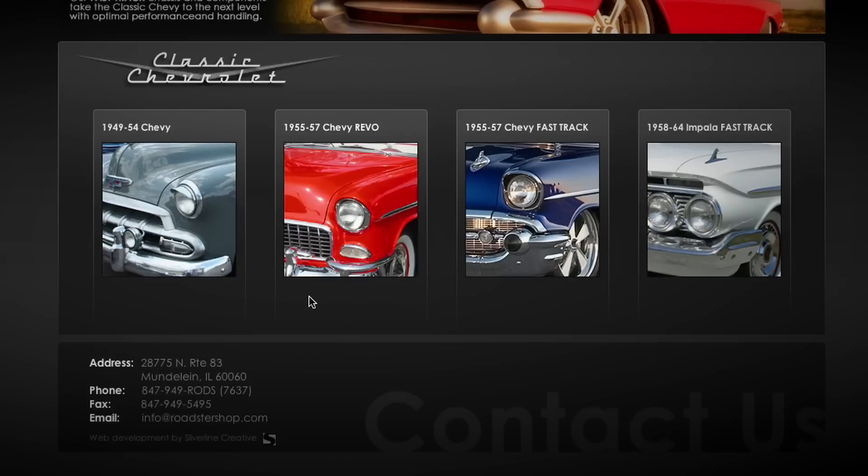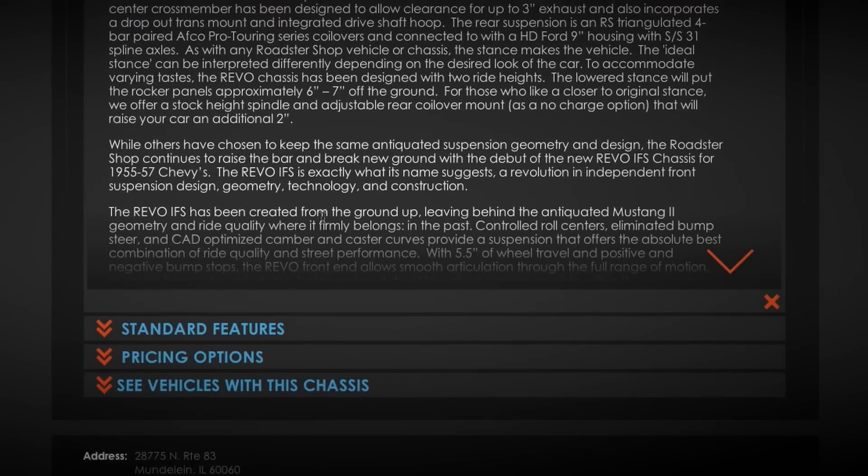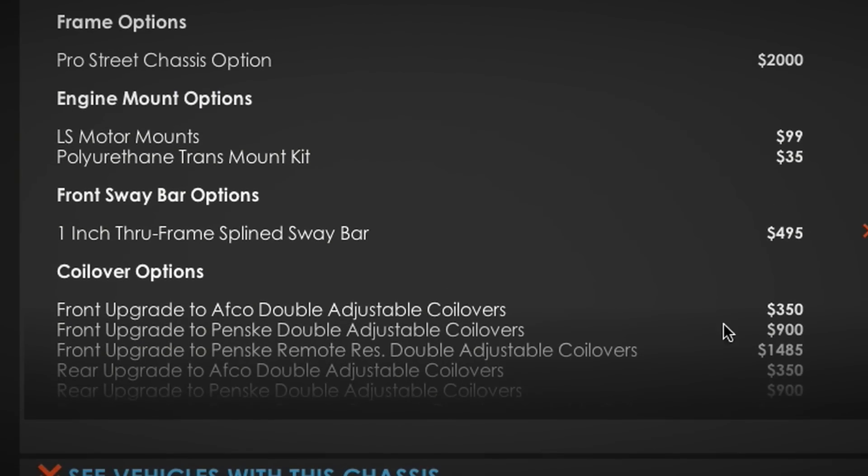We offer this chassis for the nomads, convertibles, hardtops, sedans, wagons, all models that were available in 1955 to 57.